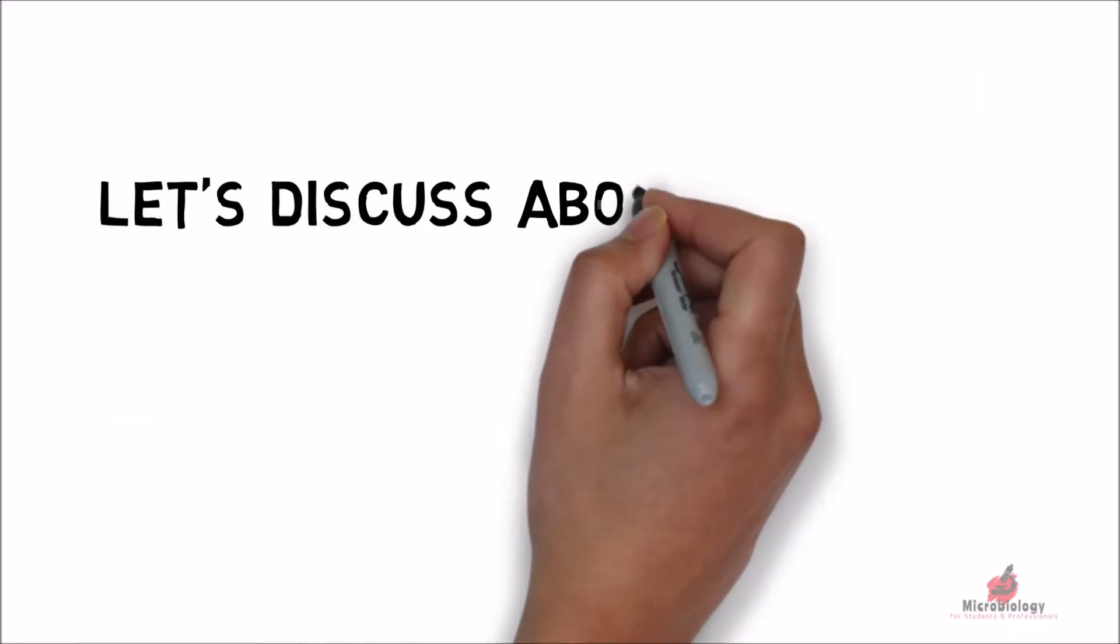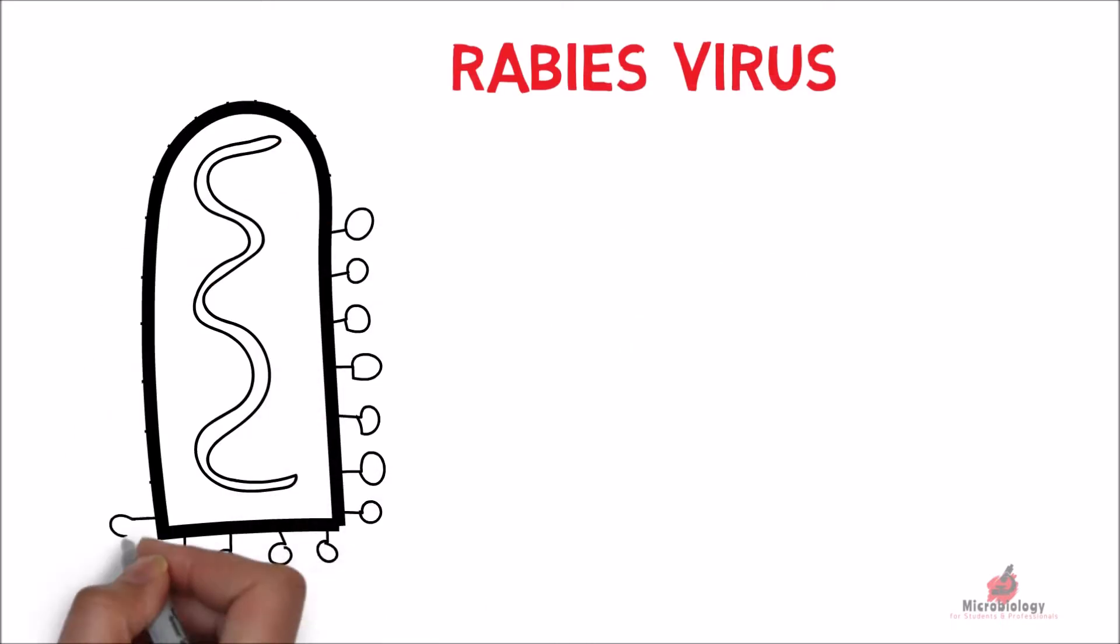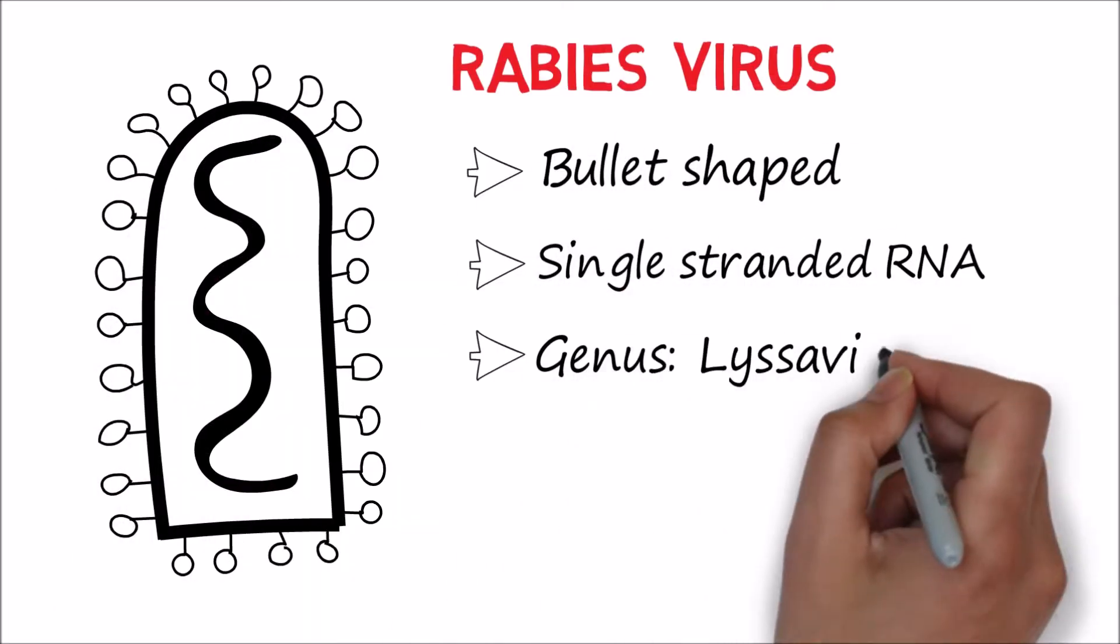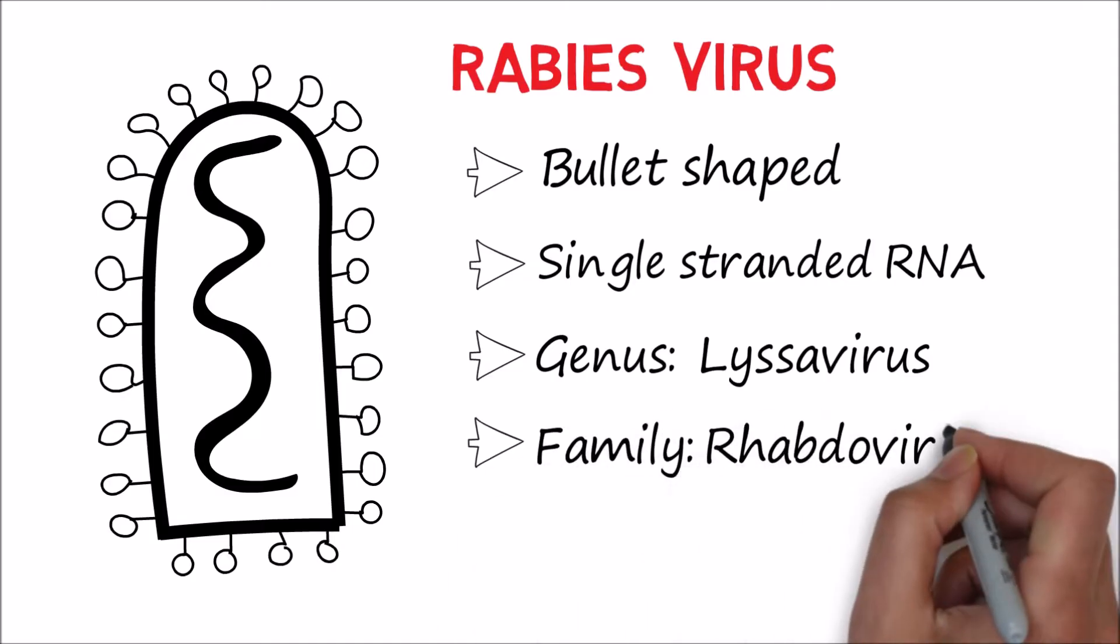Let's discuss rabies. Rabies virus is a bullet-shaped, single-stranded RNA virus. It belongs to the genus Lyssavirus and Rhabdoviridae family.